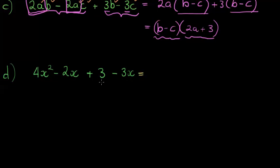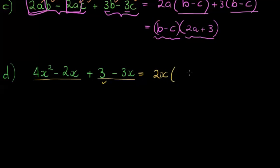The next example looks similar. That term only has a 3 and not all terms share a factor of 3, and 3 doesn't divide 4 or 2, so a simple GCF won't work. I group 4x² minus 2x together. The greatest common factor of those two terms is 2x: 4 divided by 2 gives 2, and x² divided by x gives x. After taking out 2x, I replace it with 1, leaving negative 1.